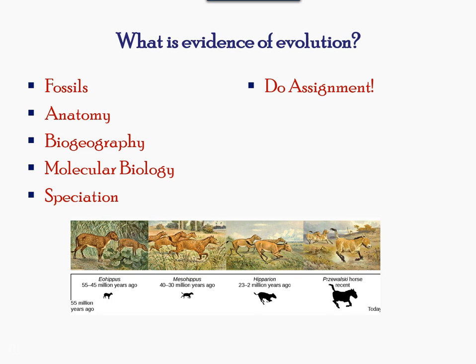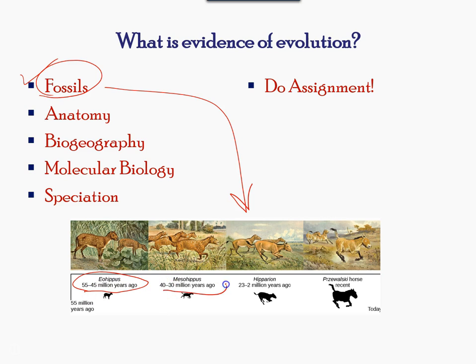Now, in this section we will explain some of the evidence of evolution. Fossils provide solid evidence that organisms from the past are not the same as those found today. The age of a fossil determines when the organism lived relative to the present era. Here we can track the appearance of the horse and its predecessors through changes in climate and environment.